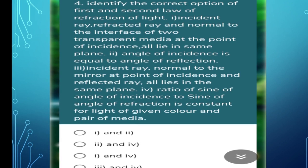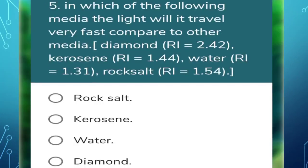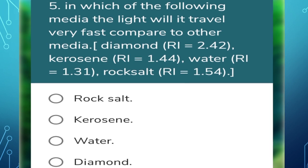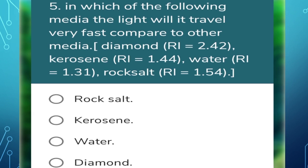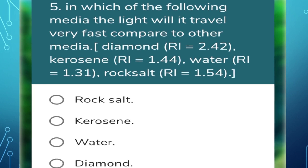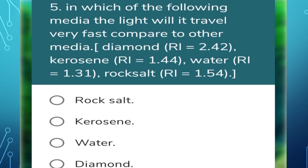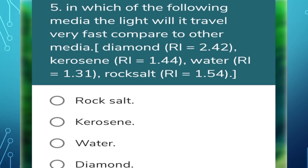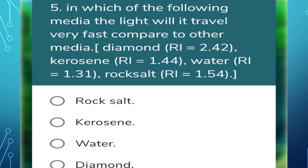Next question: in which of the following media will light travel fastest — diamond, kerosene, water, or rock salt? Water has the lowest refractive index among these, so light travels fastest in water. Therefore water is the correct answer — the third option.